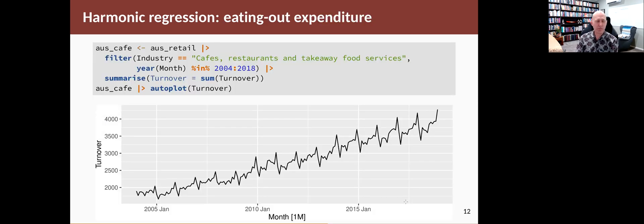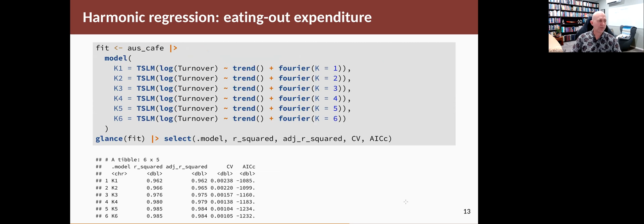Okay, let's go back to a problem we looked at in the last section, where we were doing harmonic regression on Australian cafe turnover. And we had a few different models that we fitted. And now we can look at how well they work using the AICc statistic or some of the other statistics.